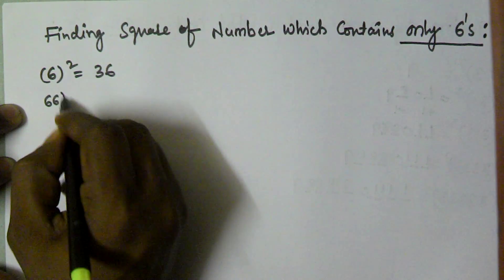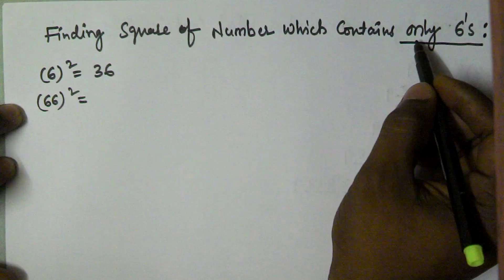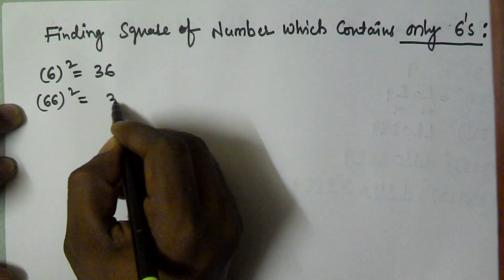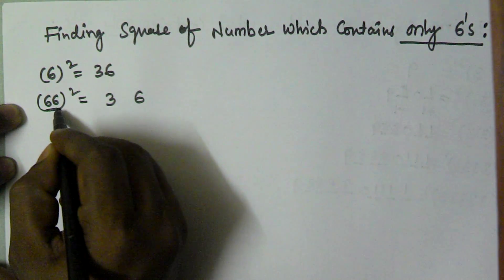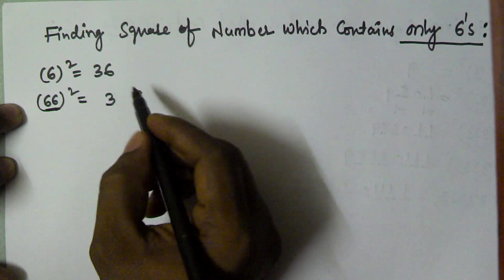We are finding the squares of numbers which contains only 6s. What is 6 square? 36. So 66 contains 2 digits. 2 minus 1 is 1, so that's why I'm taking 1 space before 6 and 1 space before 3.